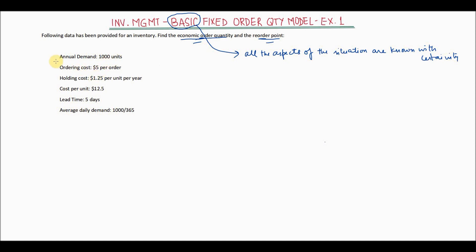The annual demand of this item is 1000 units — that means annually there are 1000 units which are required. Ordering cost is $5 per order, so every time you write an order there is a cost associated with it — paper, stationery, time of the person, etc. If you write more orders, purchasing less quantity per order, your ordering cost increases.